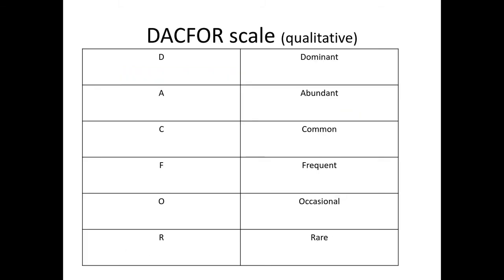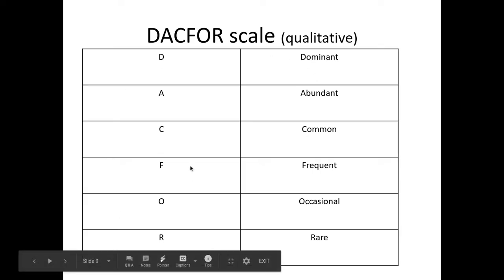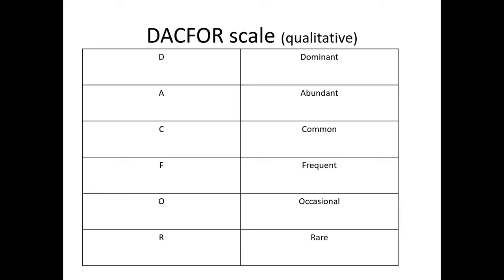Instead of doing the percentage cover, which is of course quantitative, we could use a qualitative DAFOR scale, as you can see here. For example, you would say you've got an abundance of daisies, or grasses are very common. This isn't as good because it's qualitative and you can't really use it in any kind of statistical analysis.